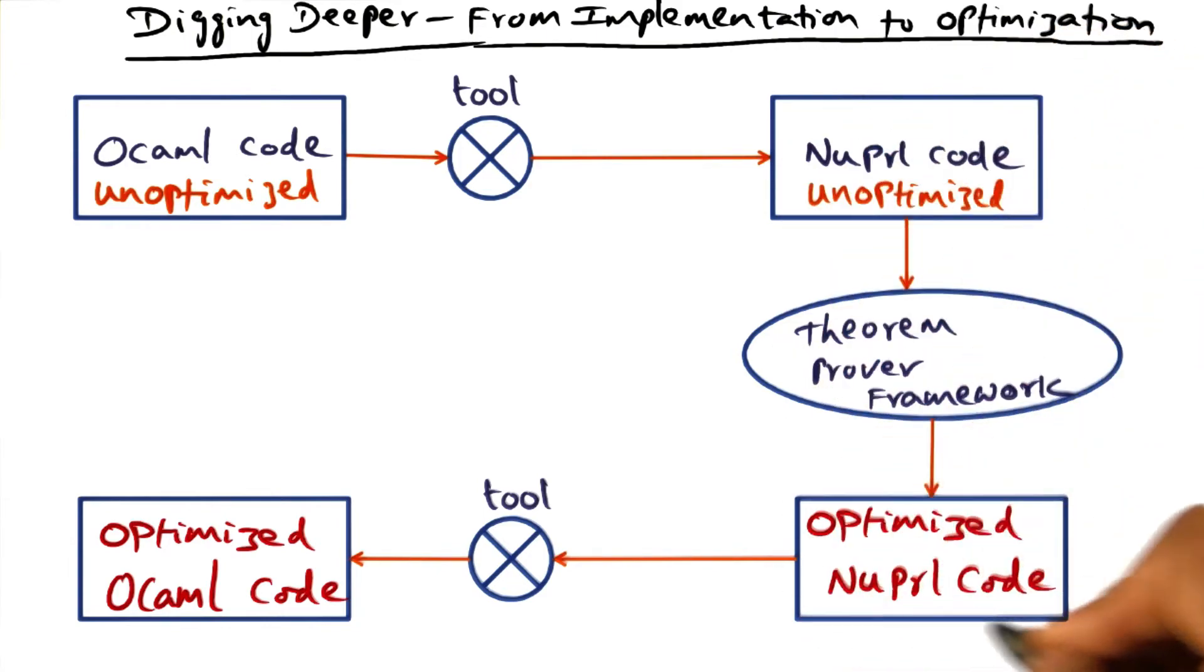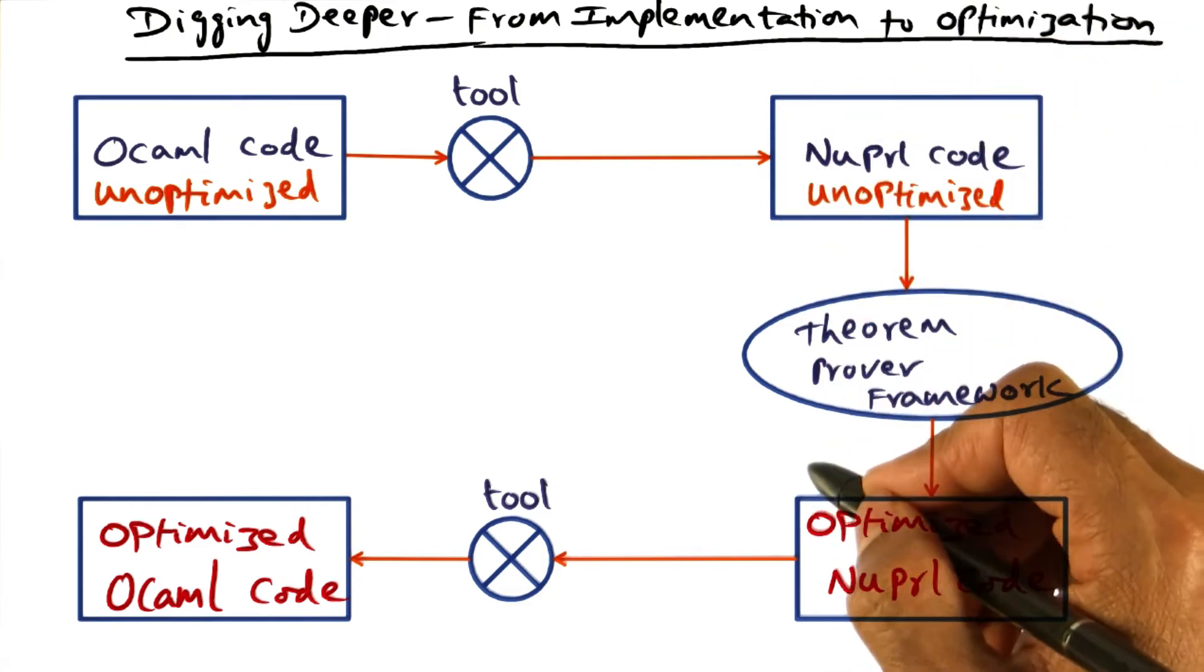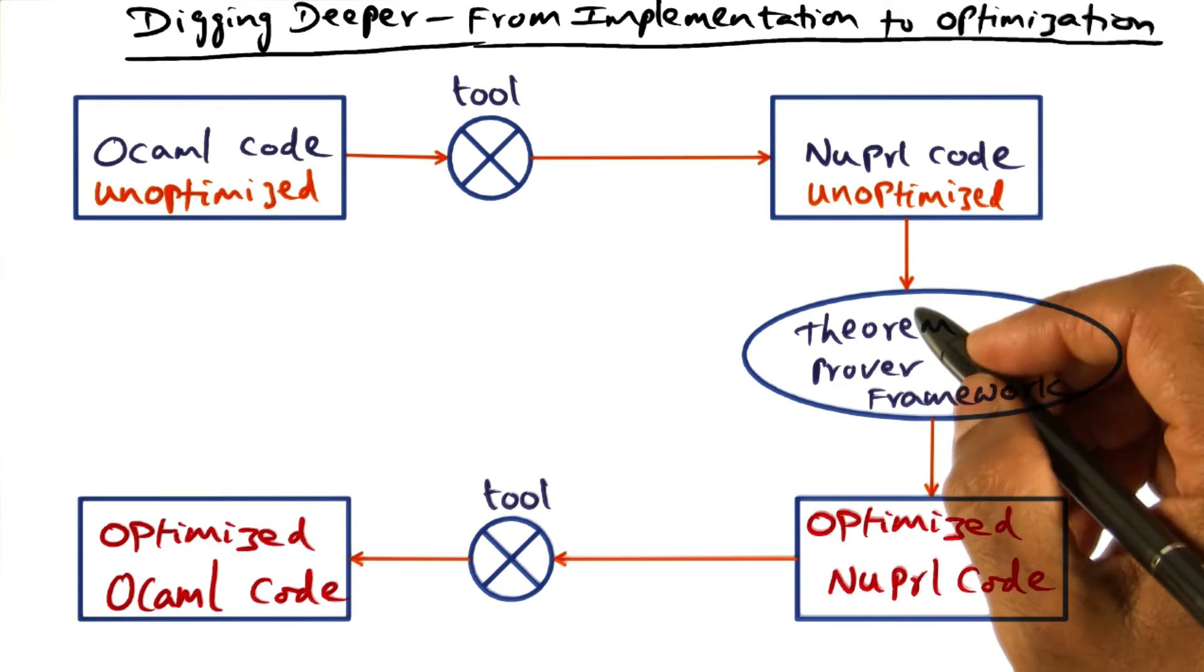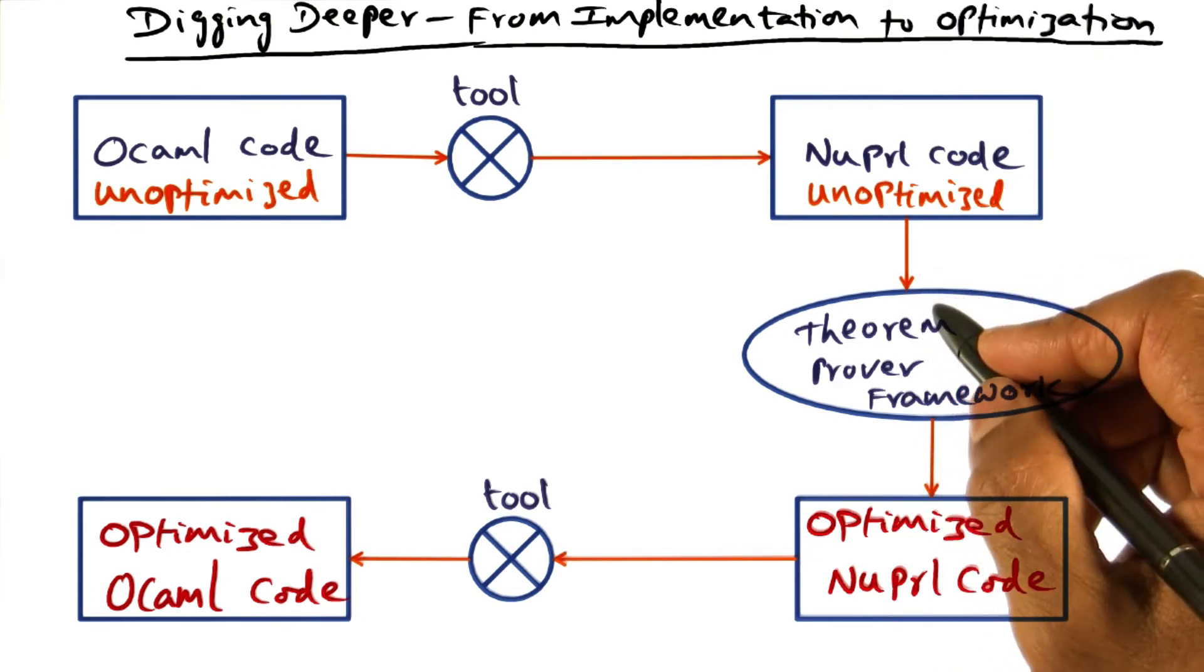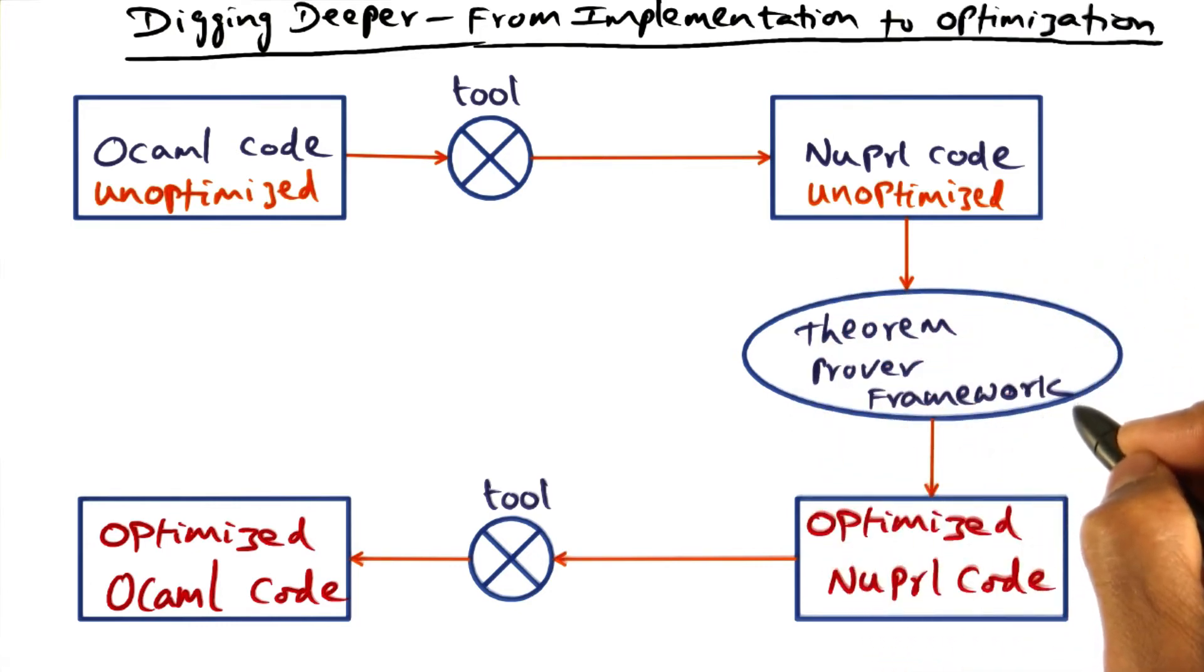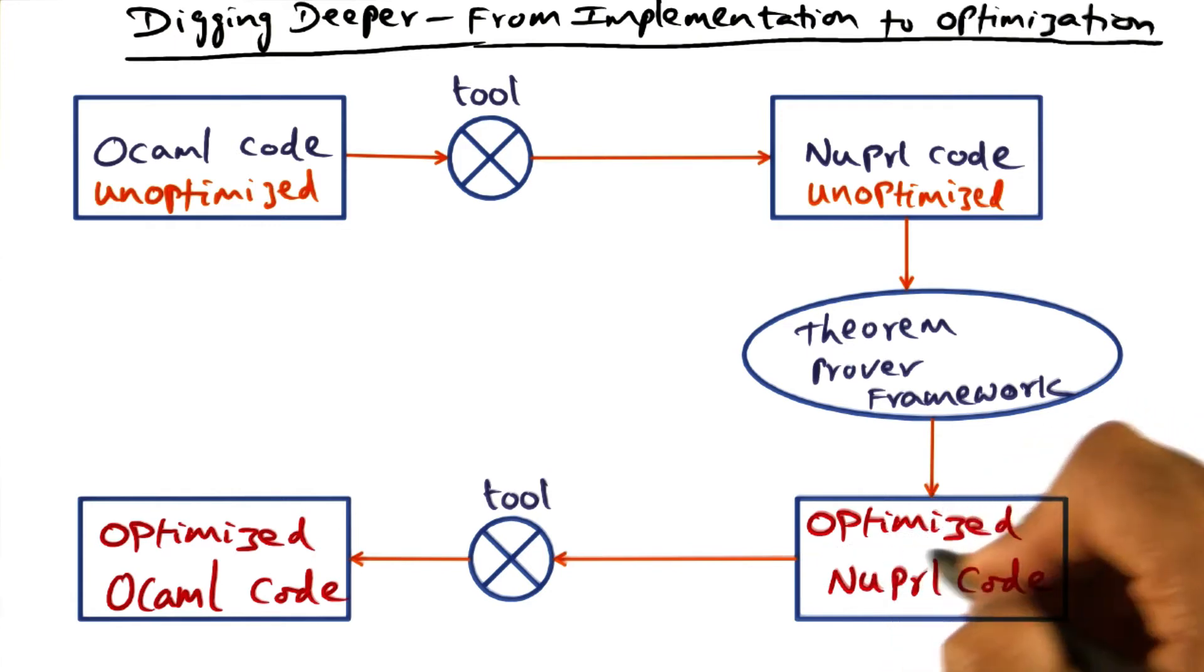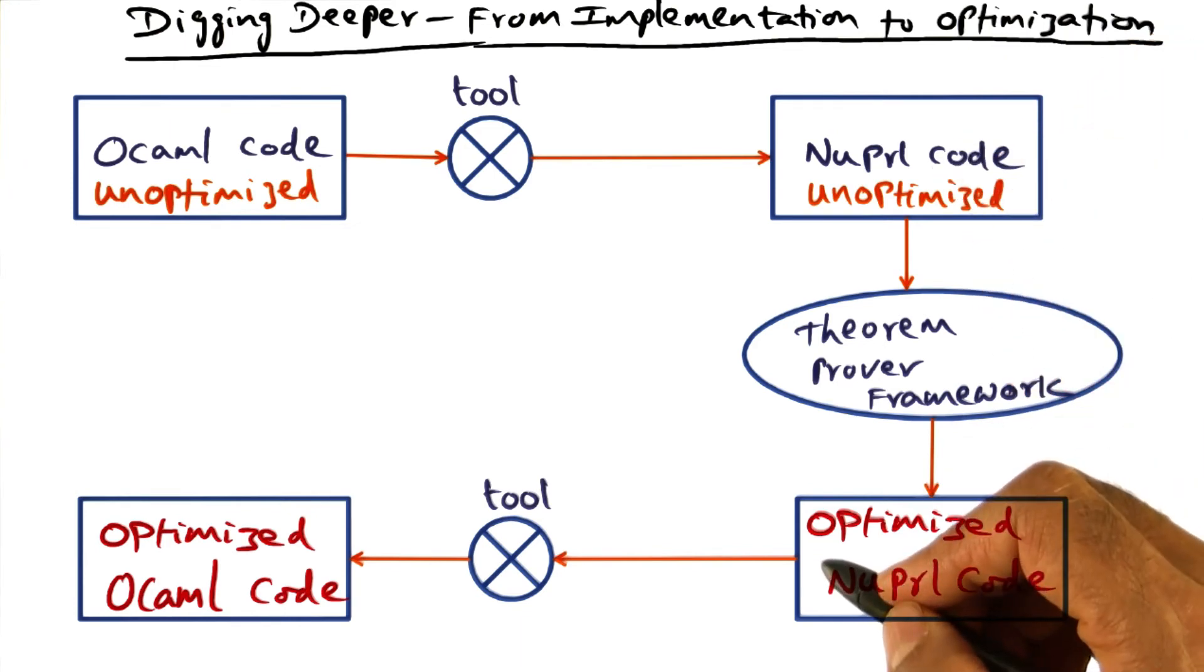So, as far as the operating system design experience is concerned, we're going to treat this as magic. And if you are interested in digging deeper, I welcome you to do that. But for the purposes of this lesson, we're not going to go into the theoretical details of how this theorem proving framework does its work of ensuring that the optimized new PERL code is the same as the unoptimized new PERL code.